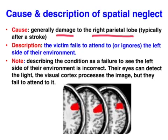In terms of the description, the terminology is critical here — this is the guts of this video. You must show an accurate understanding of this condition. You describe it as a failure to attend to, or ignoring, the left side of their environment. Saying it is a failure to see the left side is incorrect, because the retina can detect the light, that electrochemical message is conveyed down the optic nerve to the visual cortex which processes the image, but the patient fails to become consciously aware of the stimuli on the left side of their world.